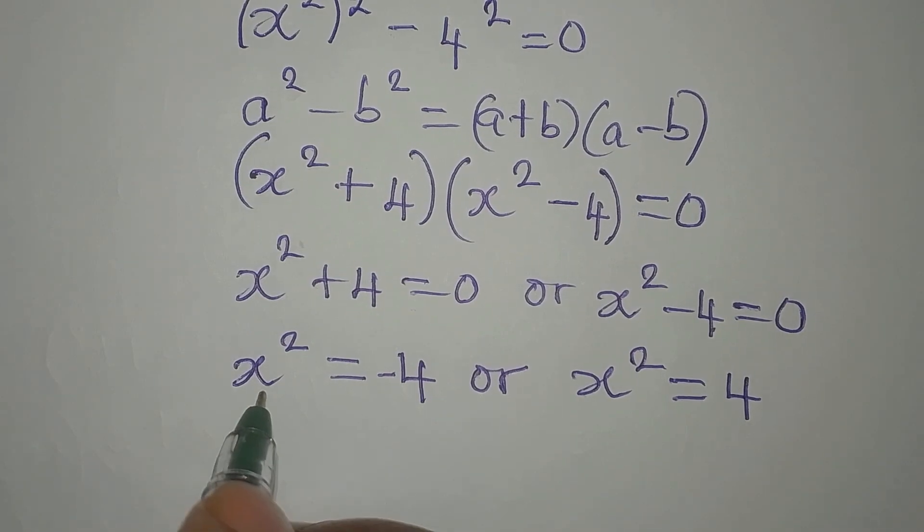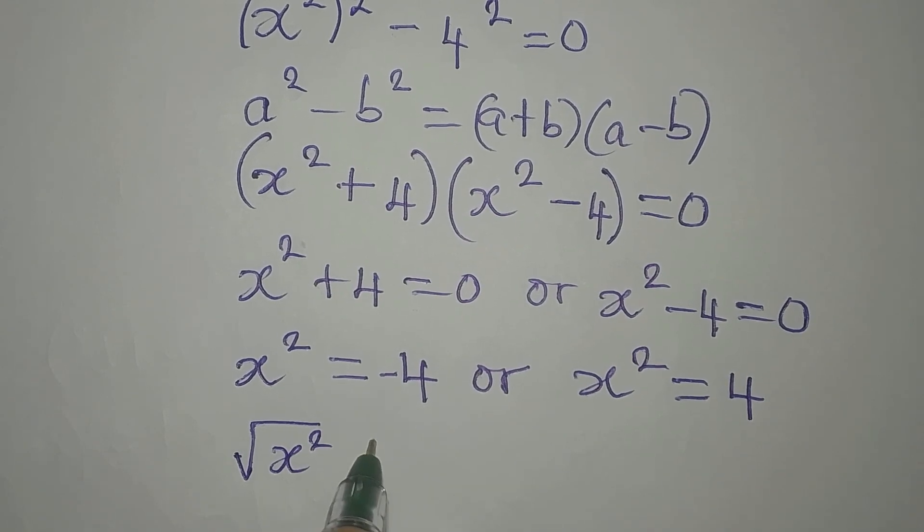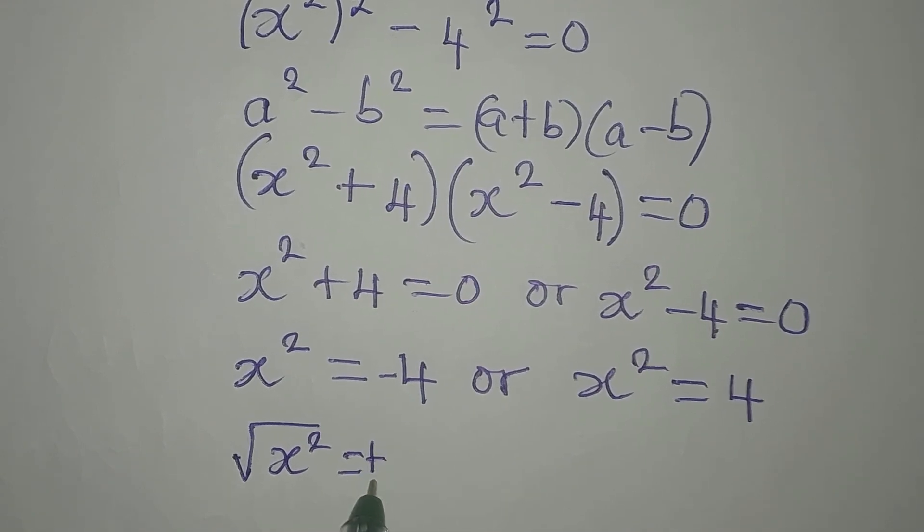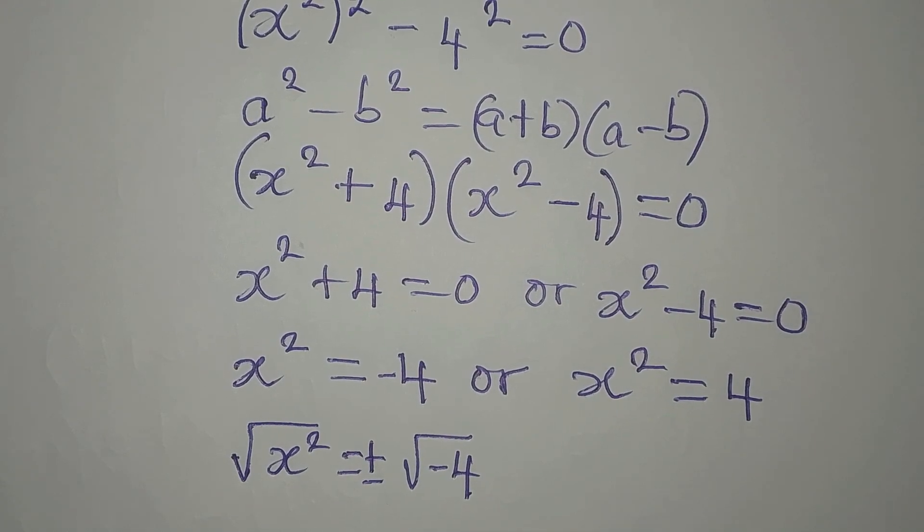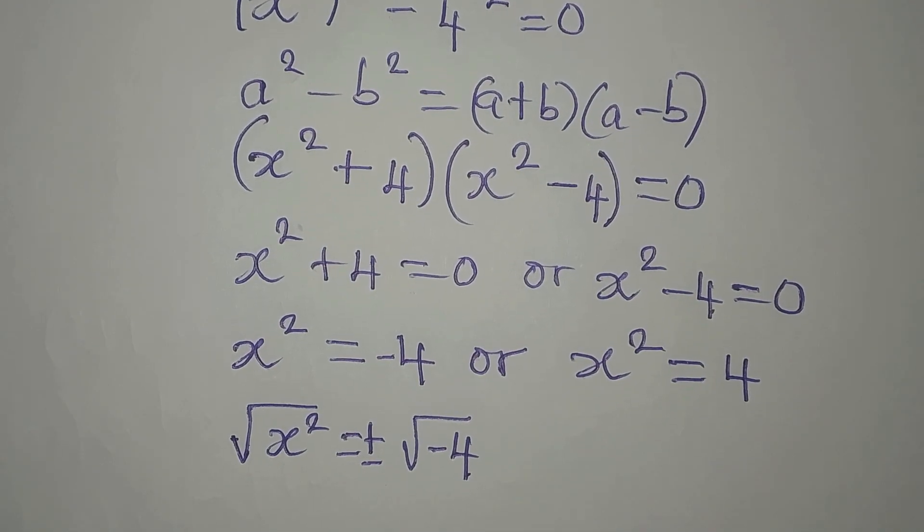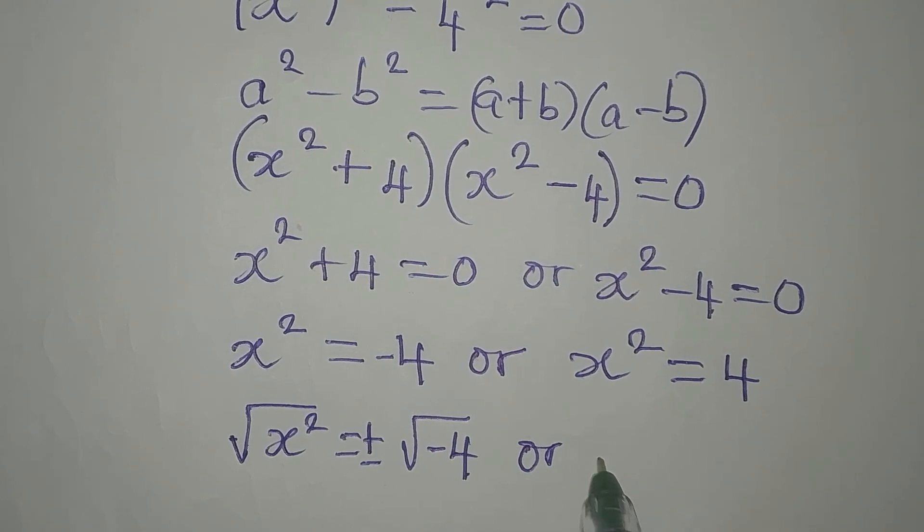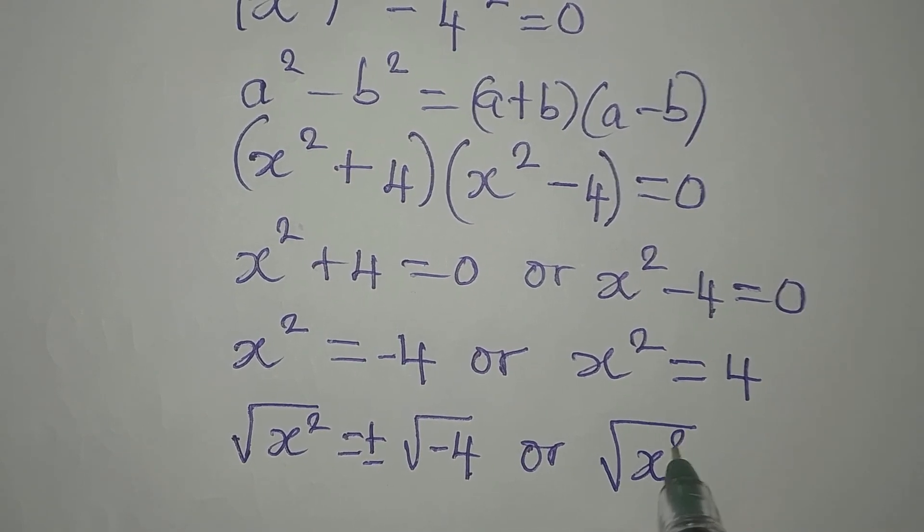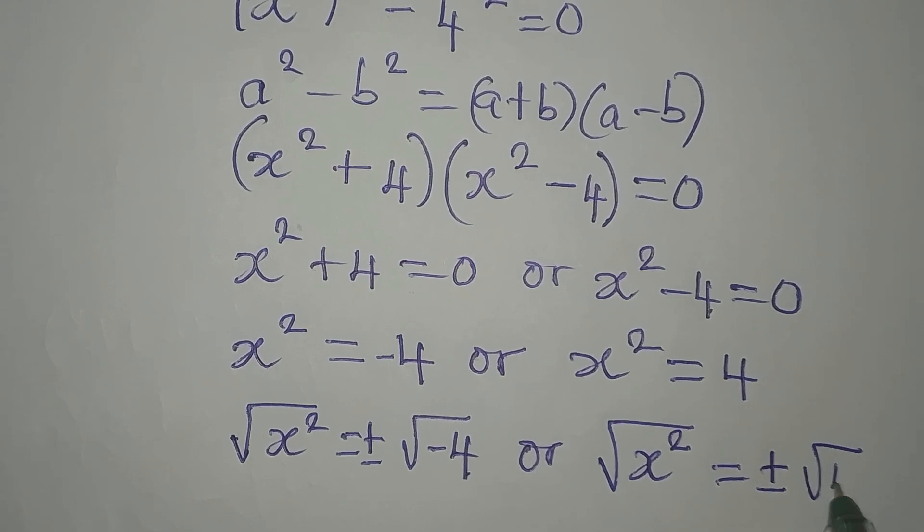Now to get the value of x from here, square root of x squared equals positive or negative square root of negative 4. Remember we have to solve everything into detail, so we have to proceed with this. Then we have the same square root of x squared equal to plus or minus square root of 4.